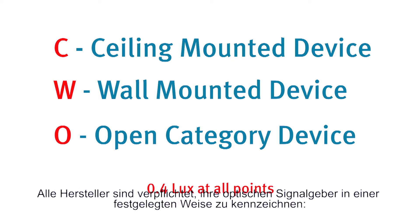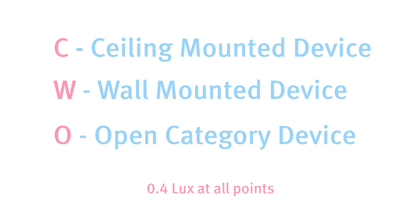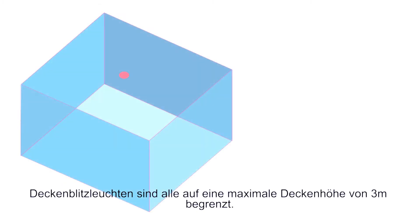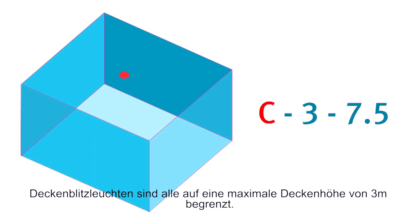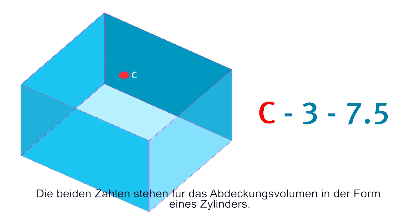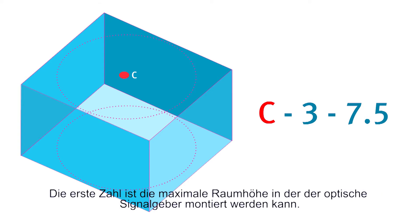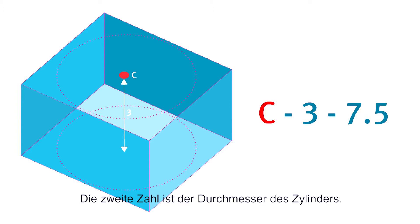All manufacturers are now required to label their VADs in a specific way. A ceiling mounted VAD might be rated as C37.5, where C stands for ceiling. The two numbers represent the coverage volume in the shape of a cylinder, where the first number is the maximum ceiling height the VAD can be mounted and the second number is the diameter of the coverage.